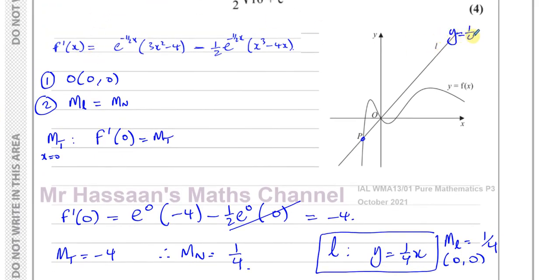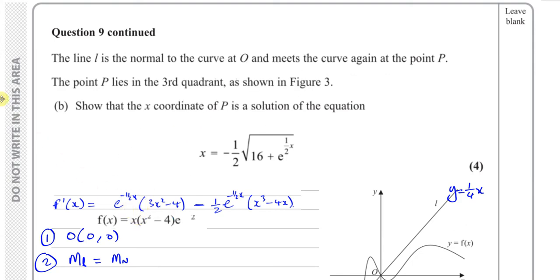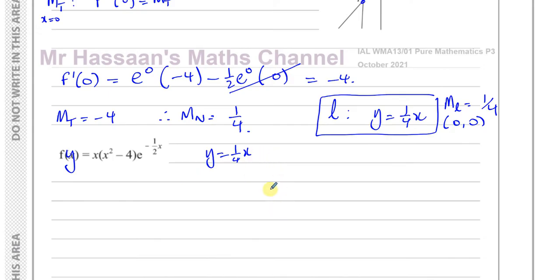Line L has equation y equals one quarter x. Now, line L intersects with the curve when we solve this pair of equations simultaneously. Taking the equation of the curve y equals x(x squared minus 4) times e to the power of minus a half x, and y equals one quarter x, I substitute one equation into the other — replacing y with x(x squared minus 4) e to the power of minus a half x.